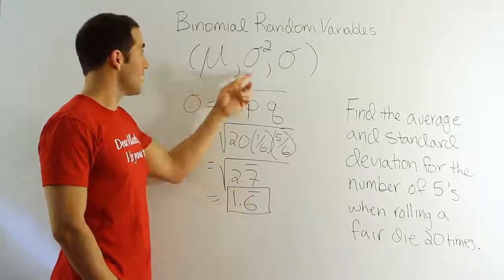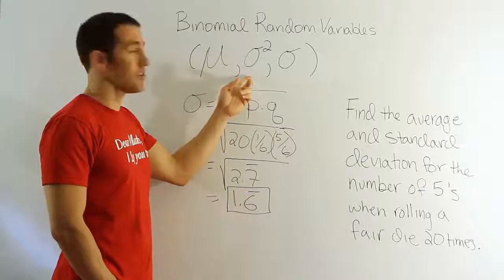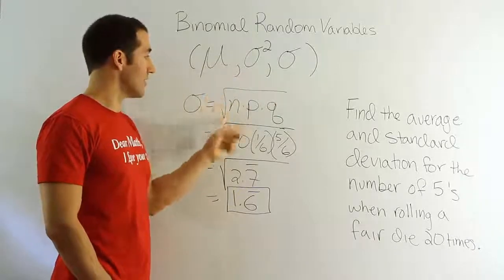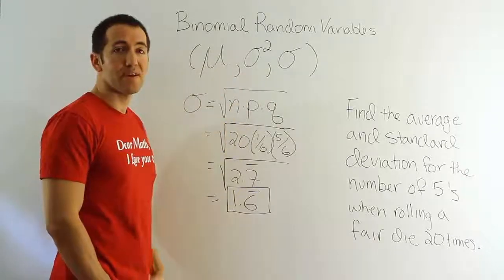So in this case, just n times p. In this case, n times p times q. In this case, the square root of n times p times q. And that's it.